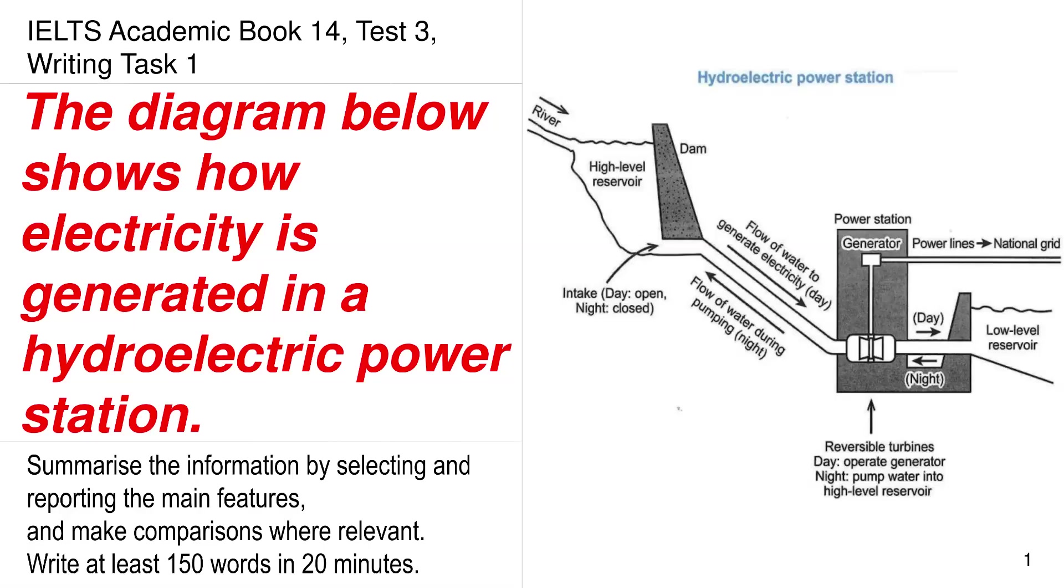Today we are going to be discussing the Cambridge IELTS Academic Book 14, Test 3, Writing Task 1. The diagram below shows how electricity is generated in a hydroelectric power station.